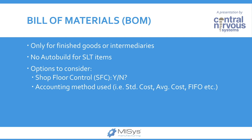About the bill of materials, a few things to note: first, bills of materials are required only for finished goods and intermediaries. Intermediaries are sometimes called sub-assemblies in discrete manufacturing environments. They are used for finished goods or intermediaries if and only if they are produced in-house versus being purchased only.